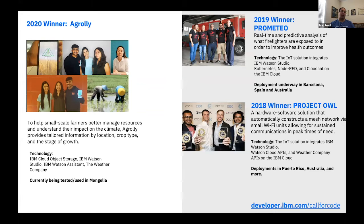Just recently announced was Agrale from Brazil, to help small-scale farmers manage resources, understand the impact on climate, and monitor how crops are doing. All three of these winners have deployments underway — Project Owl was deployed in Puerto Rico and Australia, the 2019 winner was deployed in Barcelona and Australia, and Agrale was tested and used in Mongolia. Those were all big $200,000 winners.